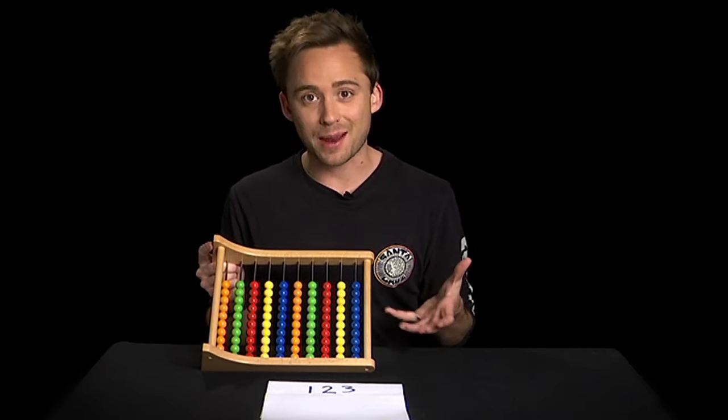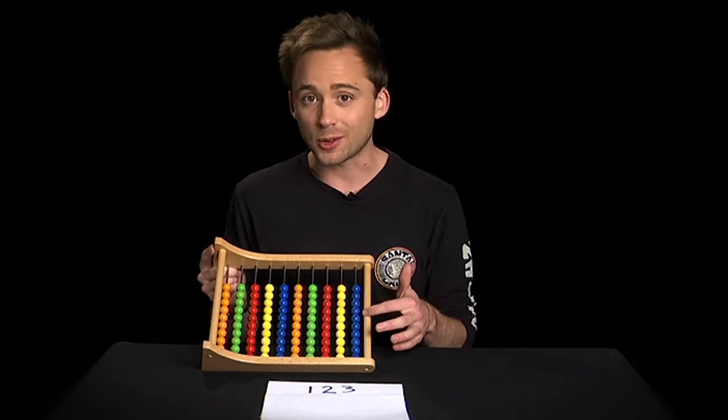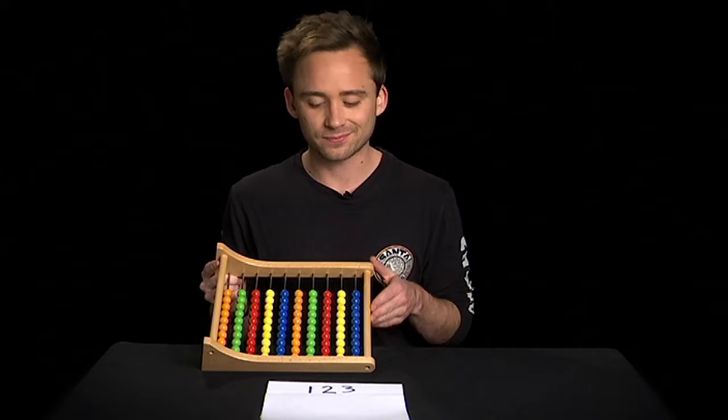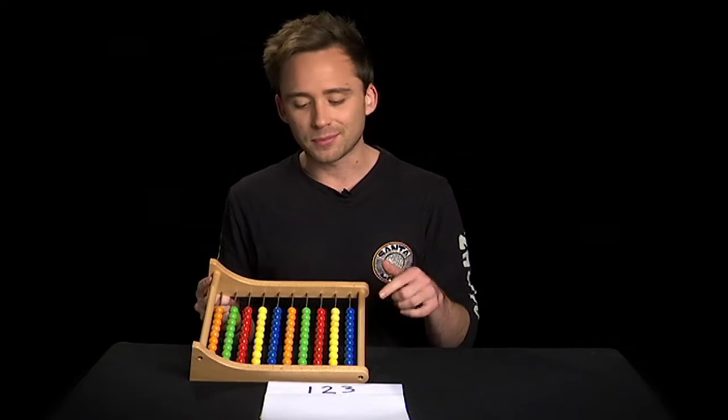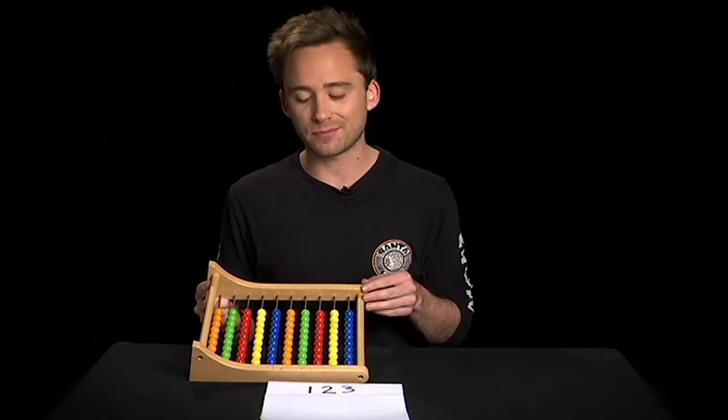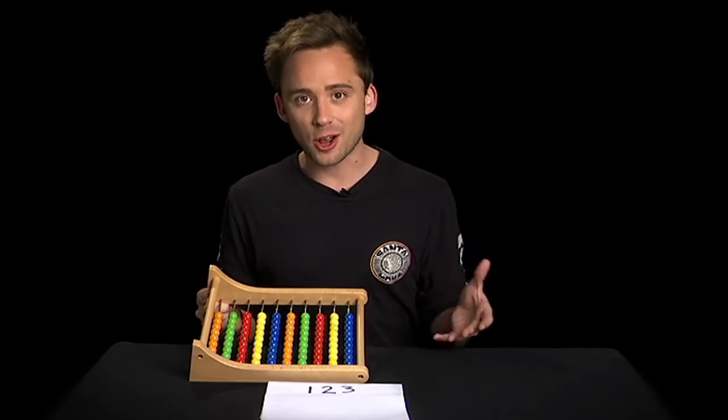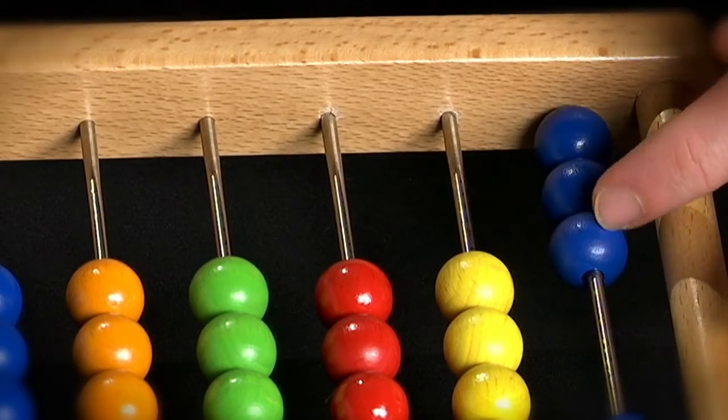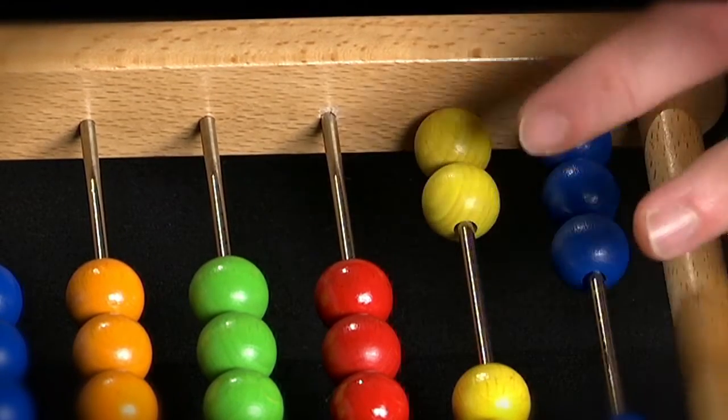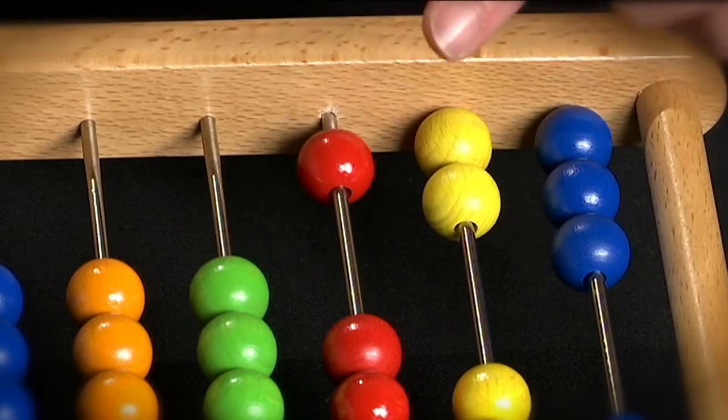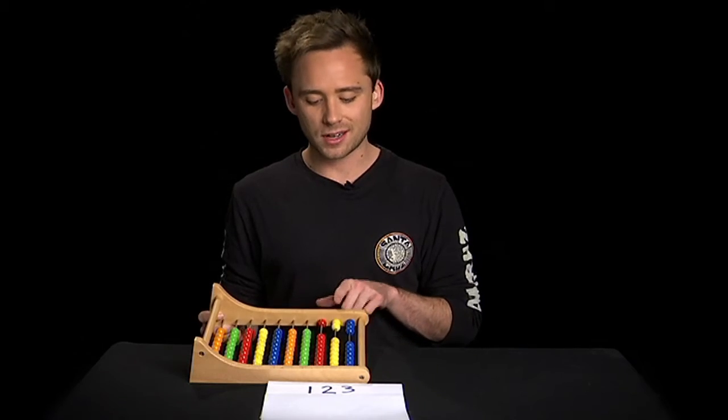This is a really simple abacus, and you can see there are columns with beads in each of them. Now if I want to write a number like 123, I just move the beads in each column. So three here, two here, and one here makes 123.